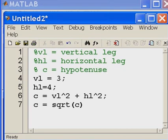That'll do it. So vertical leg is 3, horizontal leg is 4, VL squared plus HL squared equals c. Then I've got to finish it off by taking the square root of c and assigning it back to c. So I won't see any of these, but I will see this answer. This should give me a 5.